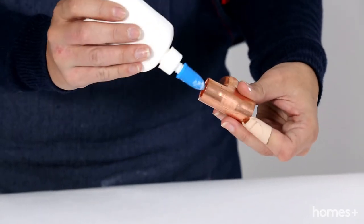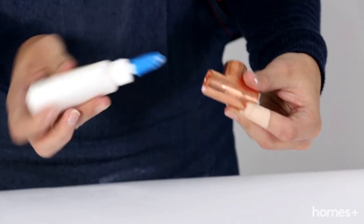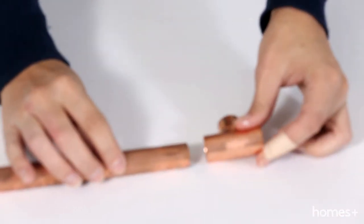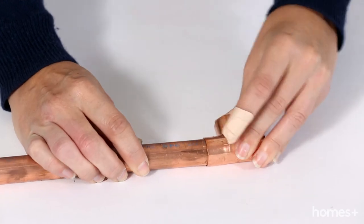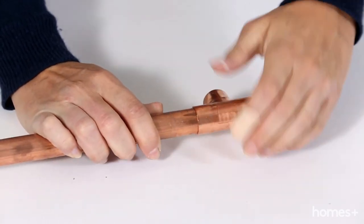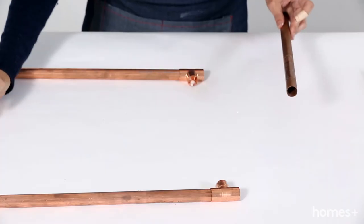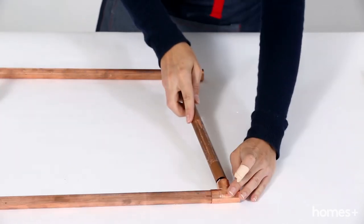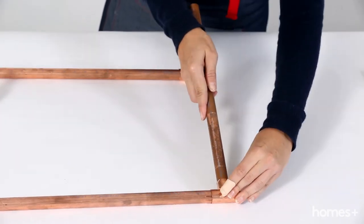Apply some glue to the inside of the copper tees. Now slide the 40 centimeter length between the two longer lengths and fix with glue.